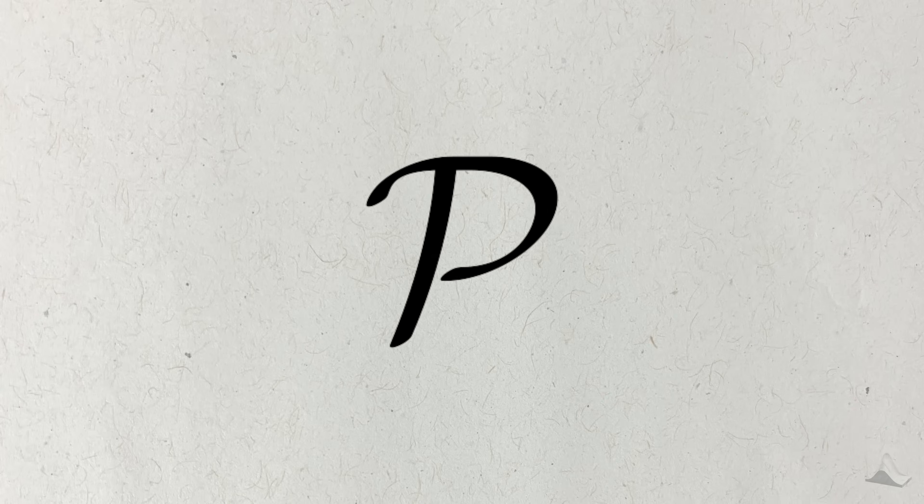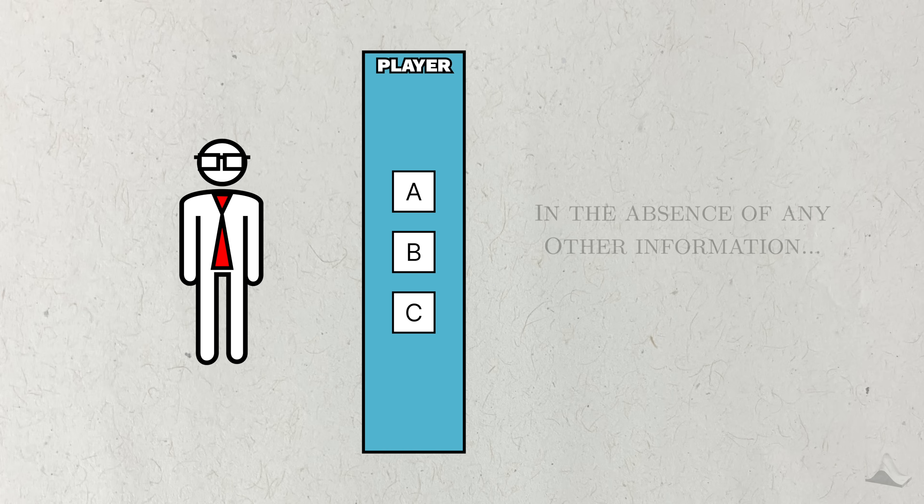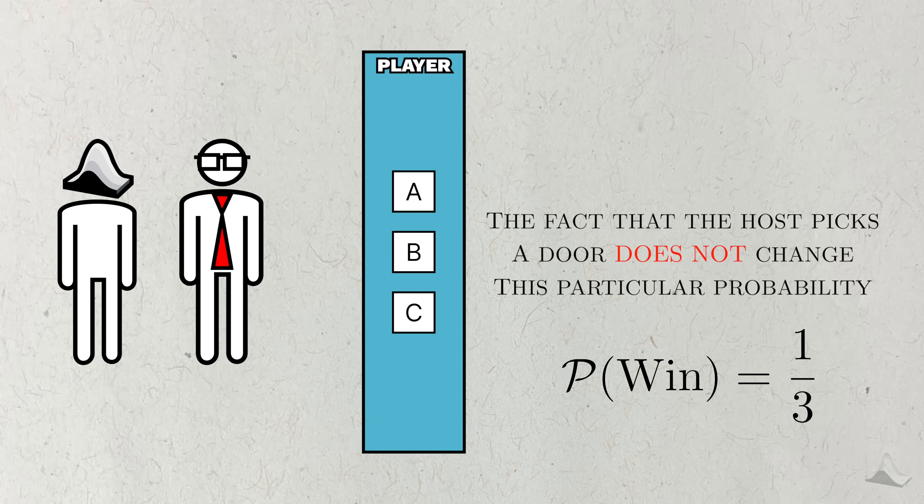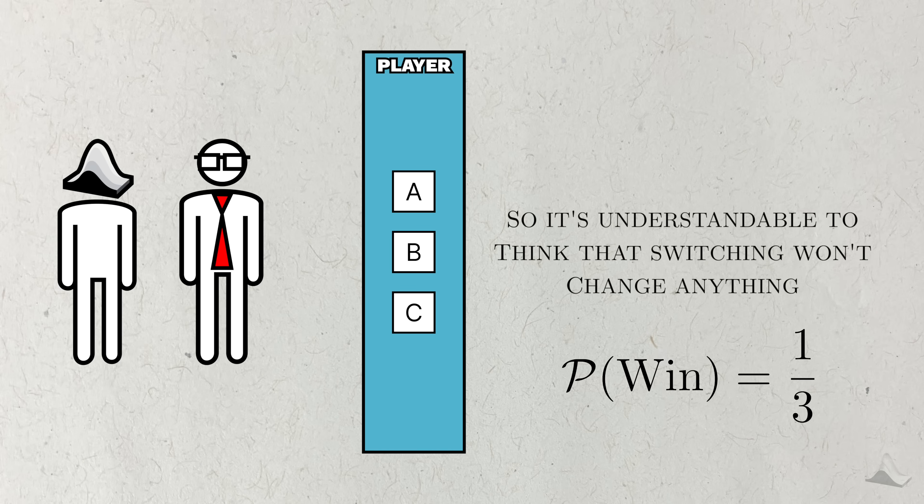From my perspective, a lot of the confusion hinges on how people think about probability. People are right to identify that in the absence of any other information, the marginal probability that any door will have the prize should be one-third. The fact that the host picks a second door does not change this marginal probability. So at first glance, it feels like the host's actions don't matter.